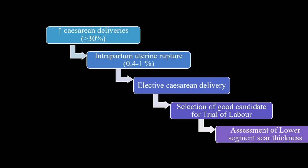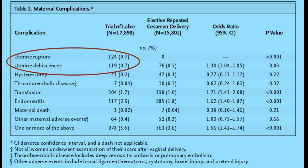Why is it important to measure the scar thickness or lower uterine segment thickness? In the present day there is an increase in the number of cesarean deliveries and also an increase in intrapartum uterine rupture, especially because people are opting for vaginal birth after cesarean. Due to the risk of rupture, people opt for elective cesarean delivery. However, it is possible to suggest safe labor if we can select a good candidate through assessment of the lower segment scar thickness and predict outcomes.